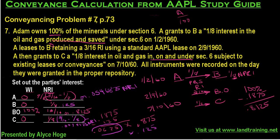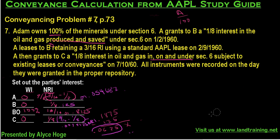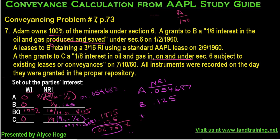To be crystal clear: A's net revenue interest is 0.0546875. B's net revenue interest is 0.125. Big Oil's net revenue interest is 13/16. C's net revenue interest is 0.0078125. Those are the interests of the parties — stay tuned for number eight.